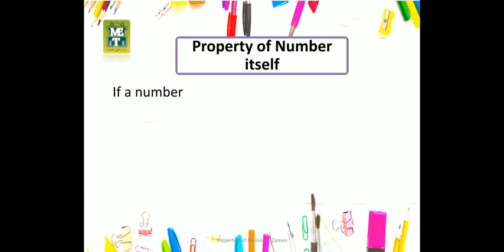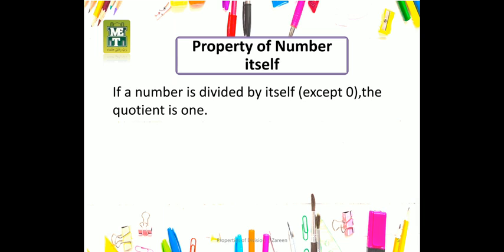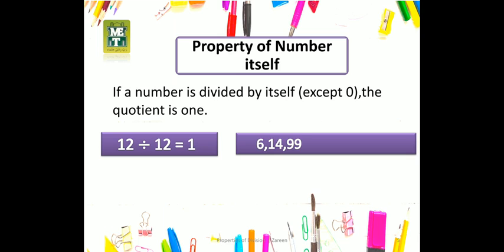Moving towards another property — property of number itself. Property of number itself states that if a number is divided by itself, except zero, the quotient is 1. یعنی جب ہم کسی number کو اپنے آپ سے divide کرتے ہیں تو quotient 1 ہوتا ہے۔ یہاں پہ دیکھیں: جب 12 کو 12 سے divide کیا، quotient 1 آیا۔ اسی طرح when we divide 6,14,992 by the same number 6,14,992, we get the quotient as 1.